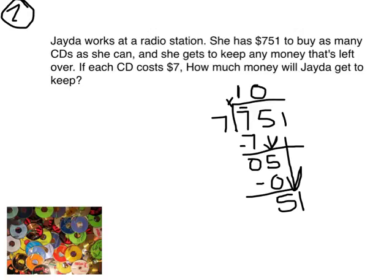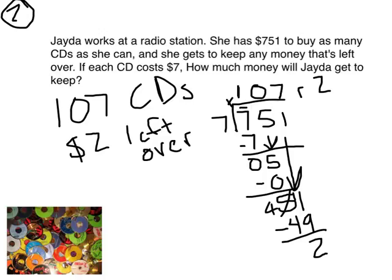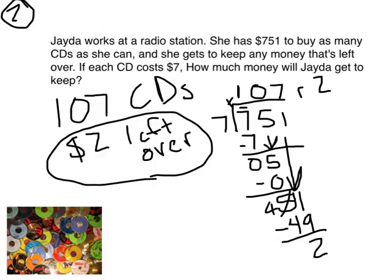I can bring down my one. How many times does seven go into fifty-one? Seven goes into fifty-one seven times. What's seven times seven? Seven times seven is forty-nine. What's fifty-one minus forty-nine? Fifty-one minus forty-nine is two. So the answer is one hundred seven, remainder two. One hundred seven is the number of CDs Jada can buy. Two stands for two dollars left over. So, how much money will Jada get to keep? Jada gets to keep the two leftover dollars.